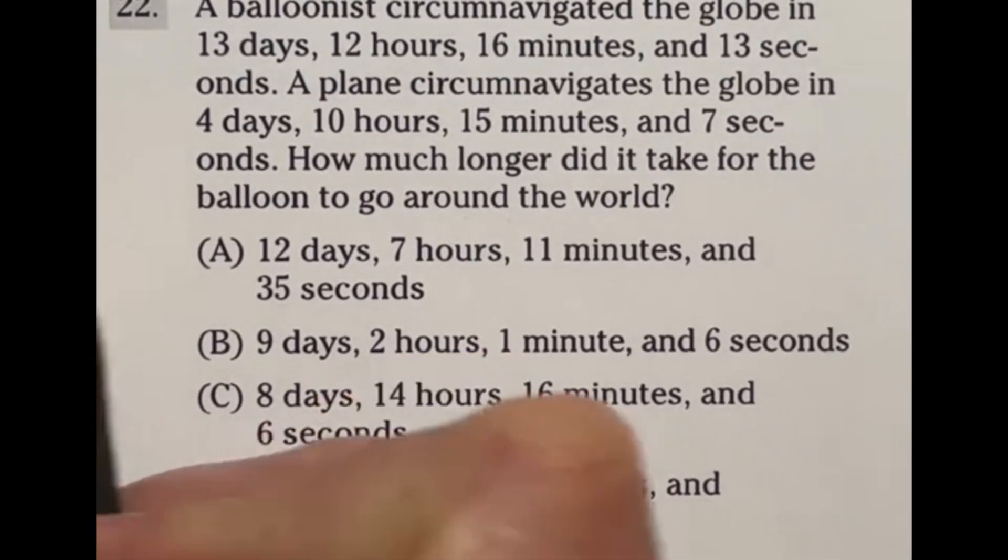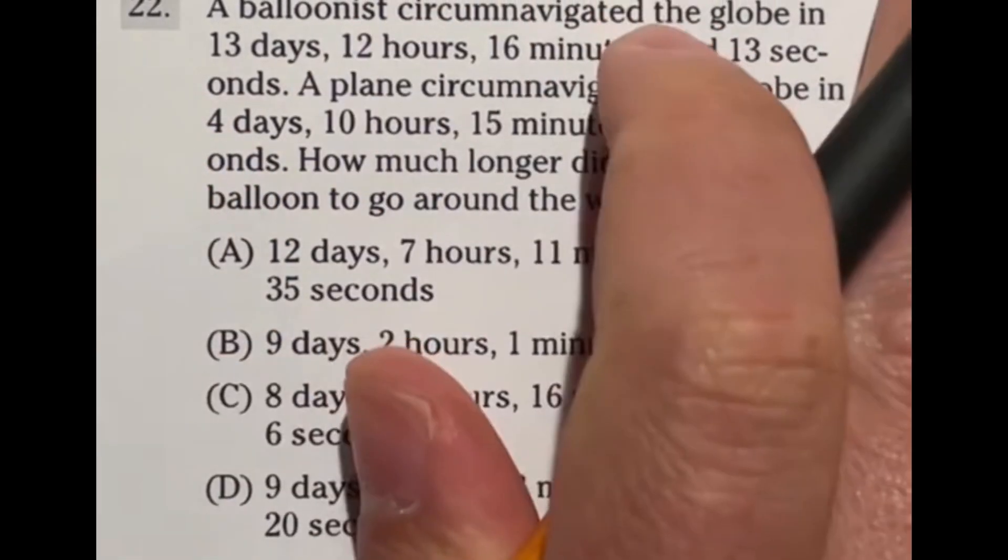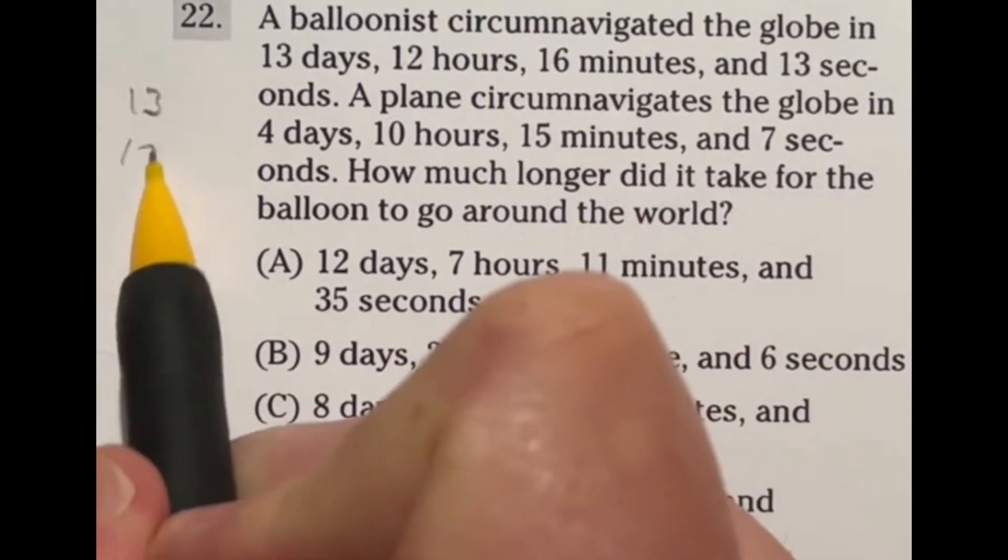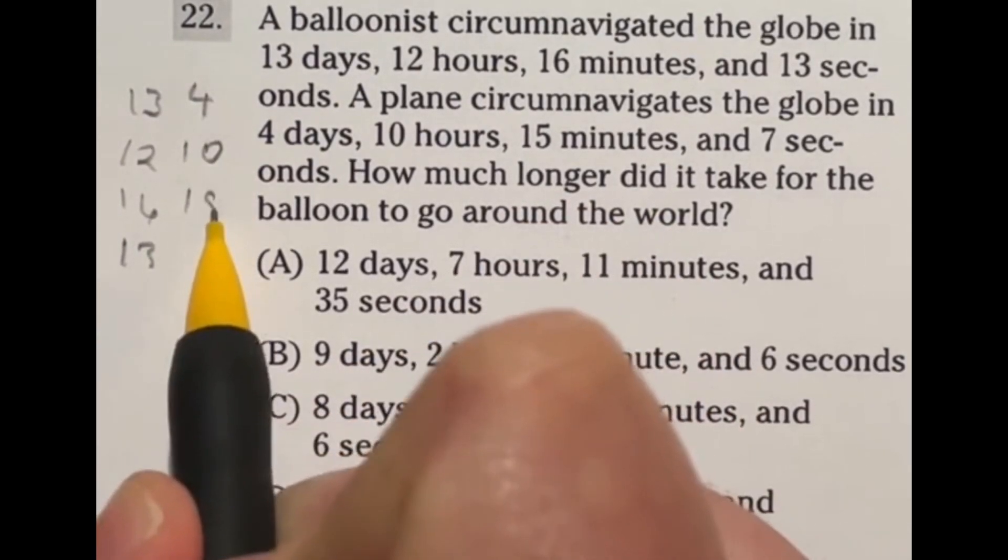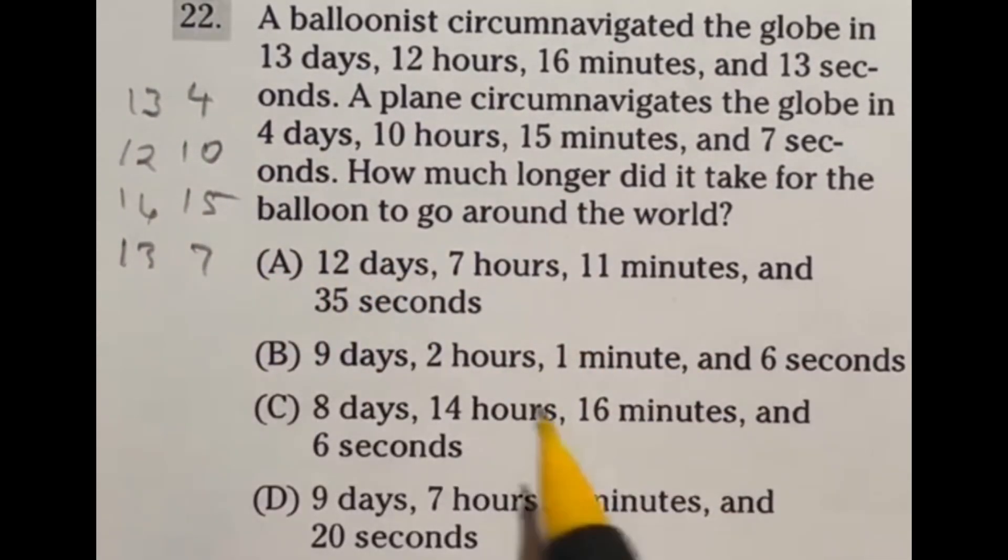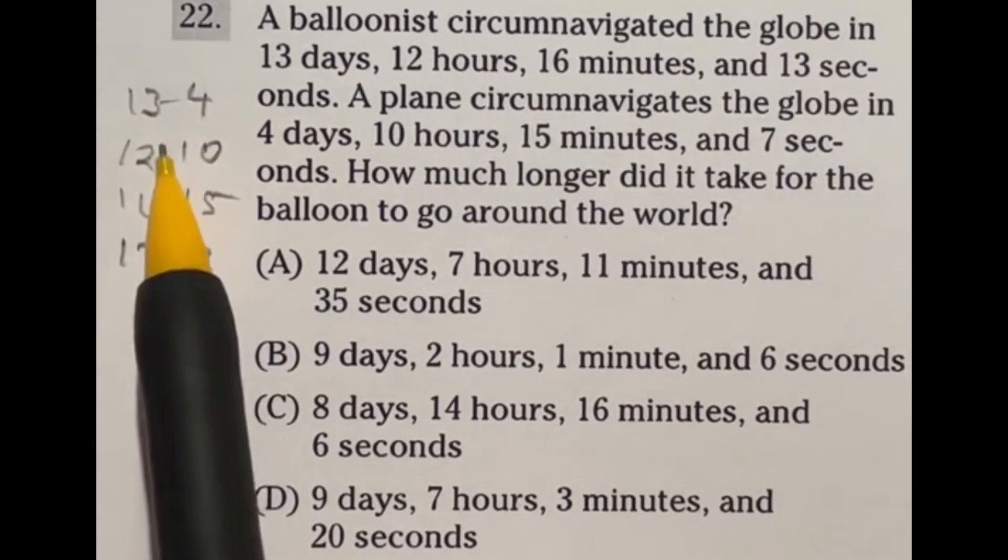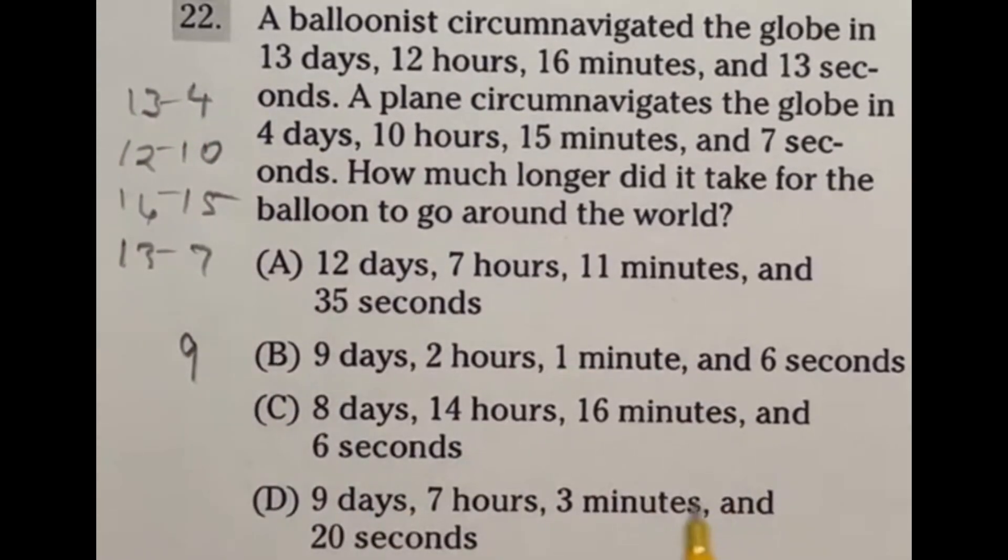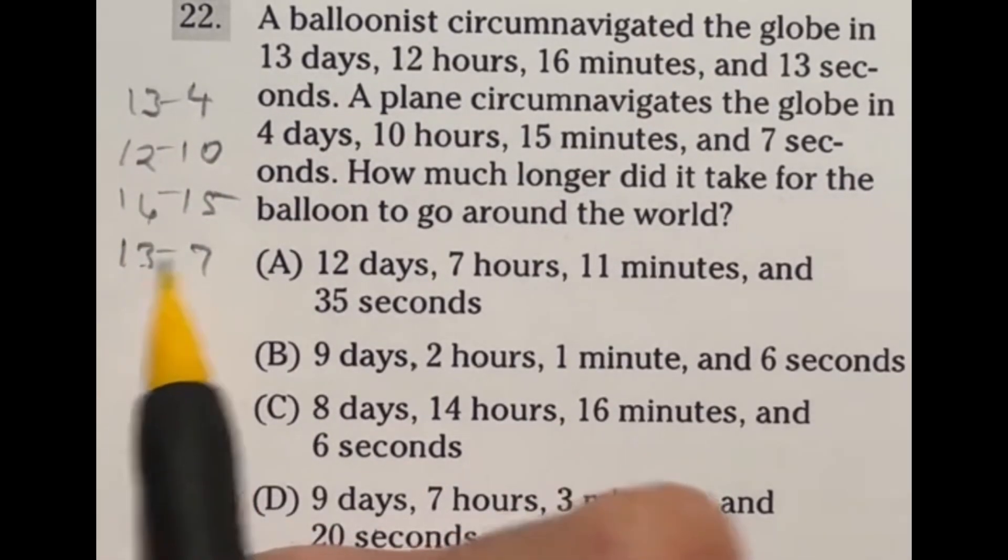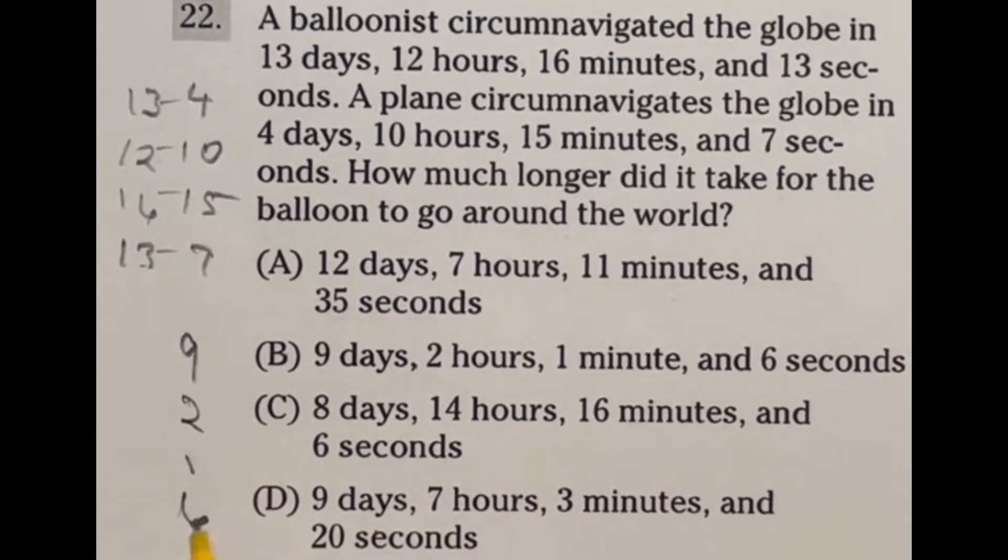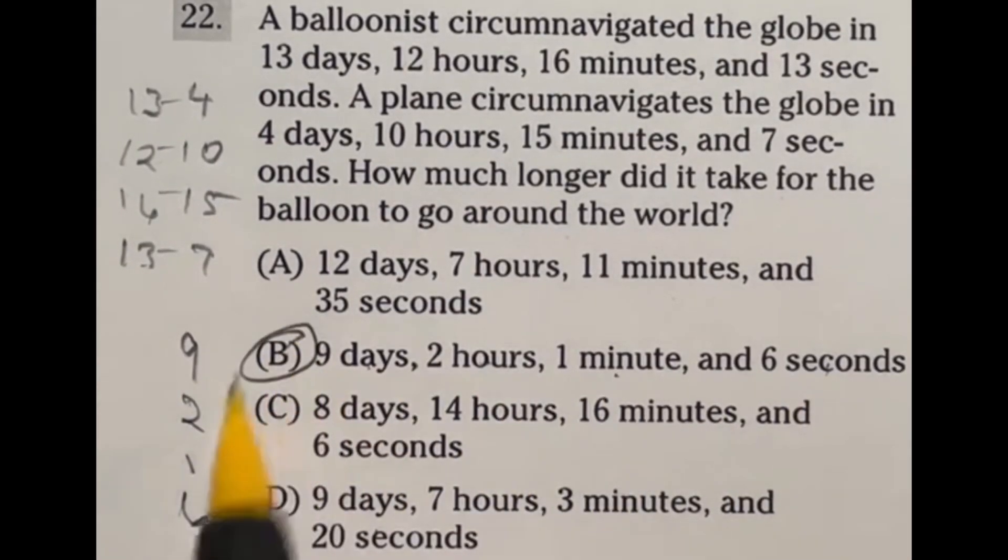So here's the deal. Let's start off by making like a list here. We got 13, 12, 16, 13, and four, 10, 15, and seven. So they want to know how much longer. So here's what I'm going to do. I'm just going to subtract each one of these. So 13 minus four is going to give me nine days. So right off the bat, it's B or D. Then 12 minus that is going to give us two hours. So it looks like our answer here is going to be B. Let's double check. And then one, 13 minus seven is going to give us six. So we should have these guys right here: nine, two, one, and six seconds. B is our final answer.